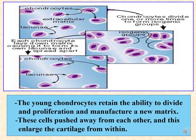The young chondrocytes retain their ability to divide, proliferate, and manufacture new matrix. The new cells are pushed away from each other, causing the cartilage to enlarge from within. This results in an increase in the size of the cartilage due to new chondrocytes secreting additional matrix around themselves.